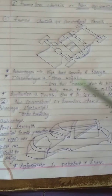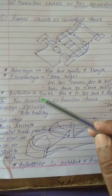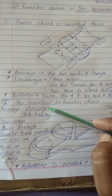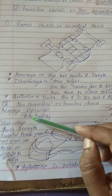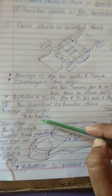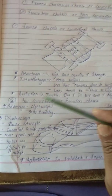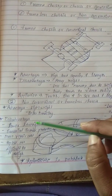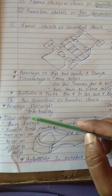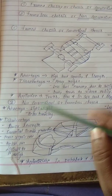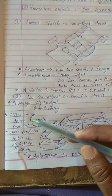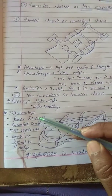The advantages are that it is lightweight and has better handling. The disadvantages are less power and strength. The frameless or non-conventional chassis is made up of lightweight materials.